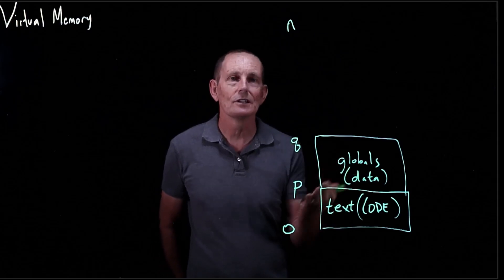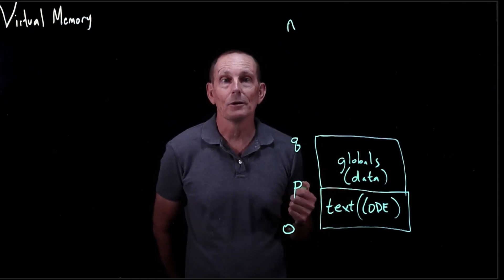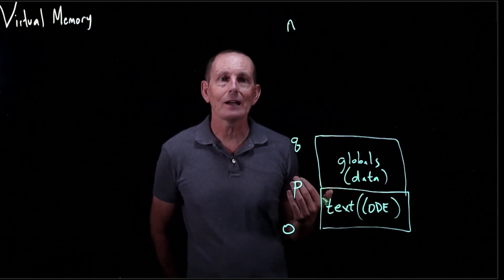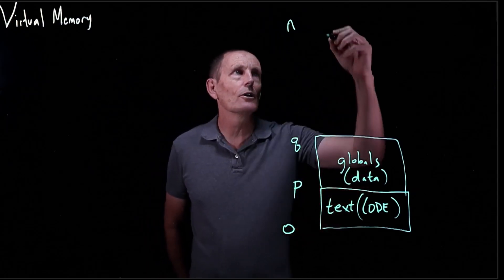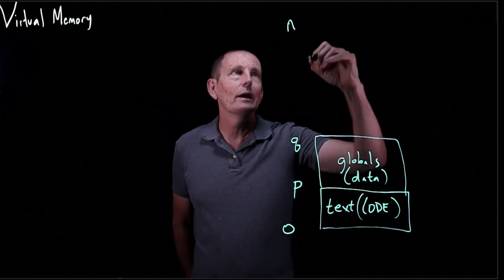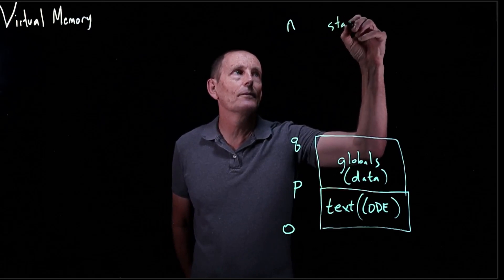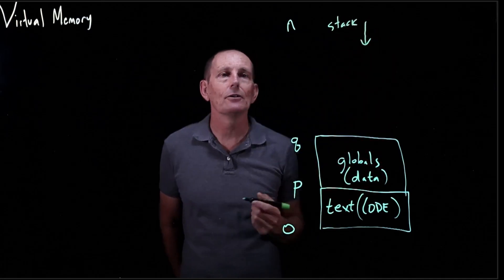So we see the code, we see the globals. Well, where are the local variables, for instance? They're in the stack. Stack we know grows down. So we're going to go ahead and start the stack way up here. So the stack is going to start growing down.